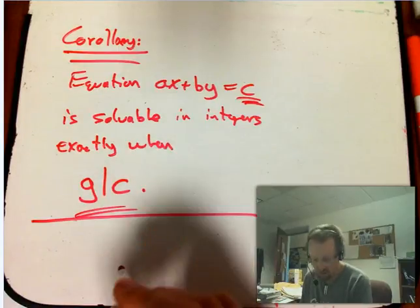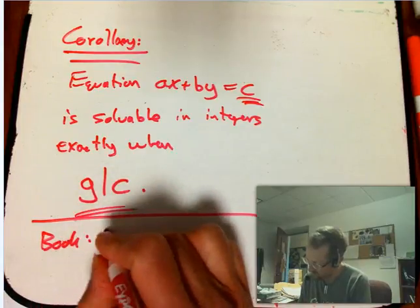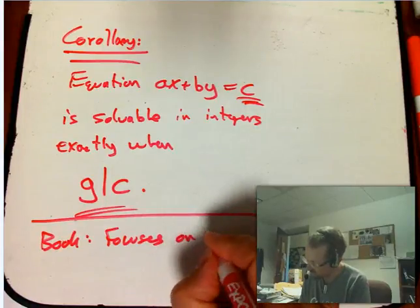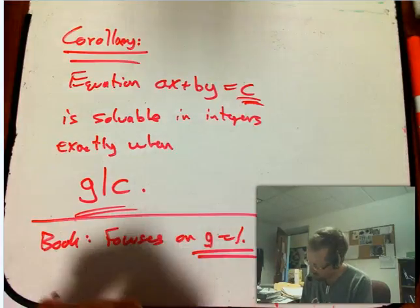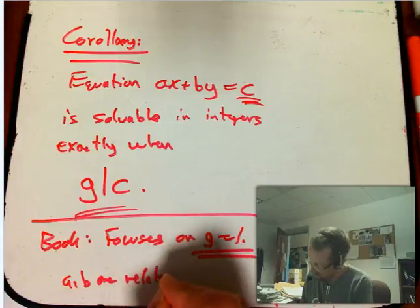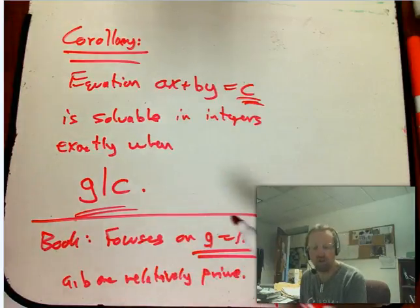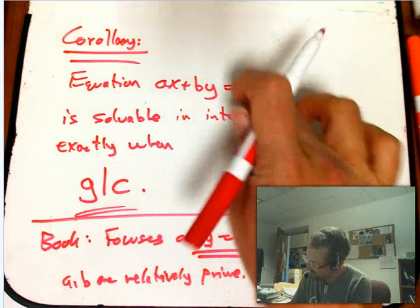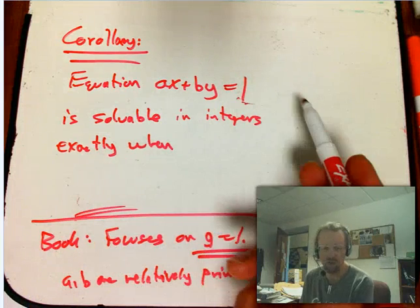Now, connecting real quick without making this video too much longer, the book, for very good reasons, it focuses really quickly, it doesn't do this in exactly the same way, it focuses on the case where G equals 1. And it's really good to really understand the case where G equals 1, in other words, A and B are relatively prime. And then go back to the case where they actually have a common factor. So this is a little bit different from how I presented it here.